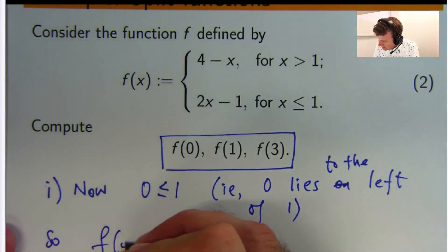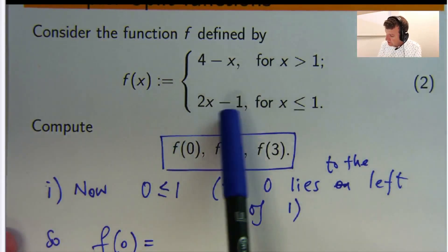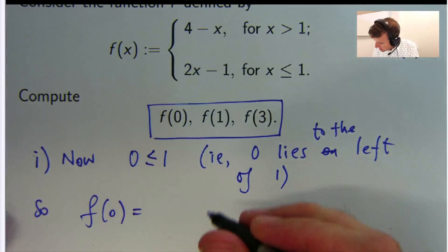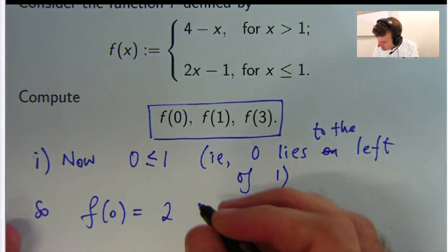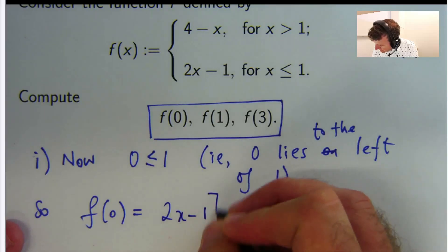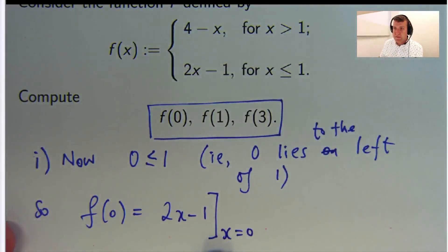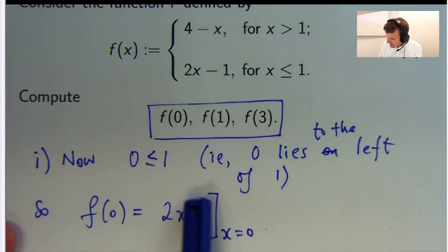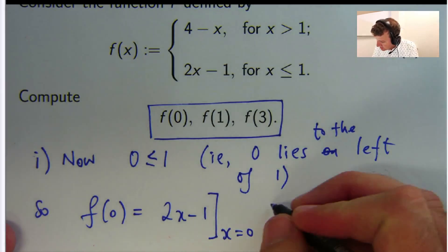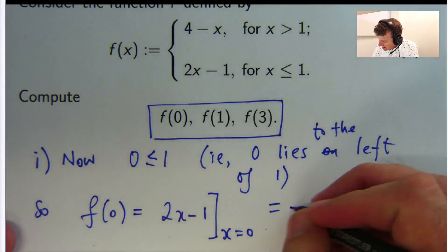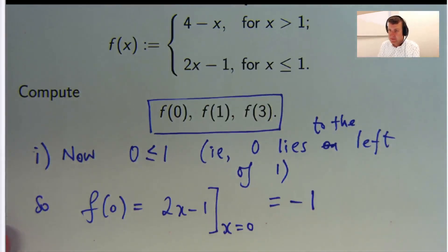So, f of 0, in this case, we want this definition, this function. So I'm going to write that like this. So what this square bracket means is that this is our function and we're about to substitute or evaluate it at x equals 0. So if I replace x with 0, I get 2 times 0 minus 1, which is just negative 1.